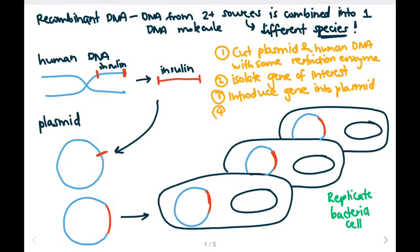Step 3 is to introduce the gene of interest into the plasmid. Finally, we put the plasmid into a bacterial cell, and we can then replicate the bacterial cell multiple times to produce our gene of interest.